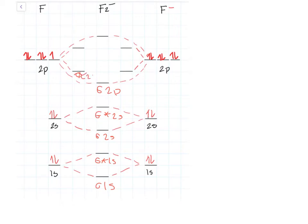Pi 2p, pi 2p, and then this one's going to be pi star 2p. Same thing with this one, pi star 2p. And the last one is sigma star 2p. Now I'm going to pair all of the electrons for F2 minus.